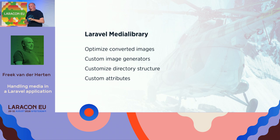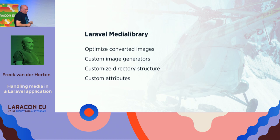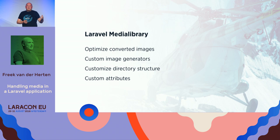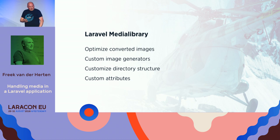It can also optimize converted images — when images get uploaded, the Media Library will apply a tiny bit of compression and remove all metadata to make them a tiny bit smaller. It can handle various file types like PDFs and generate thumbnails for those. For other file types like Office documents, there are custom image generators — a class where the Media Library asks you to generate the image for that file type. So there's an easy plug-in architecture to generate thumbnails for other files.